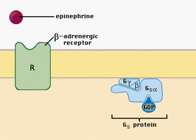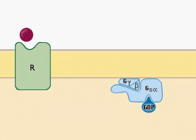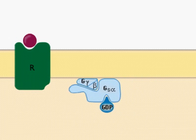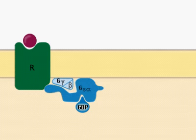Binding of epinephrine causes a conformational change in the receptor, allowing it to associate with a trimeric GS protein. Binding to the receptor creates a change in the GS-alpha subunit, resulting in GDP displacement and GTP binding.